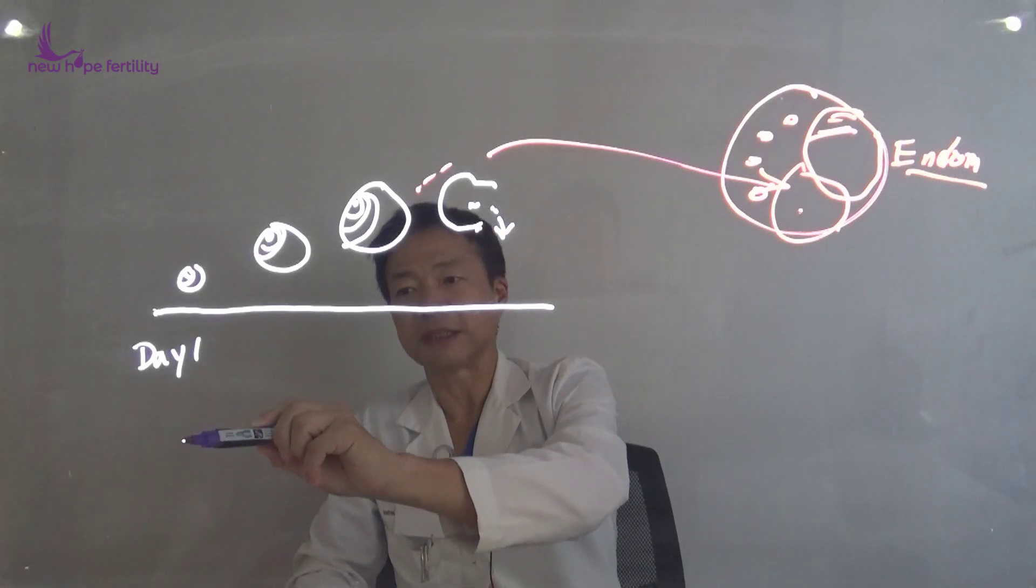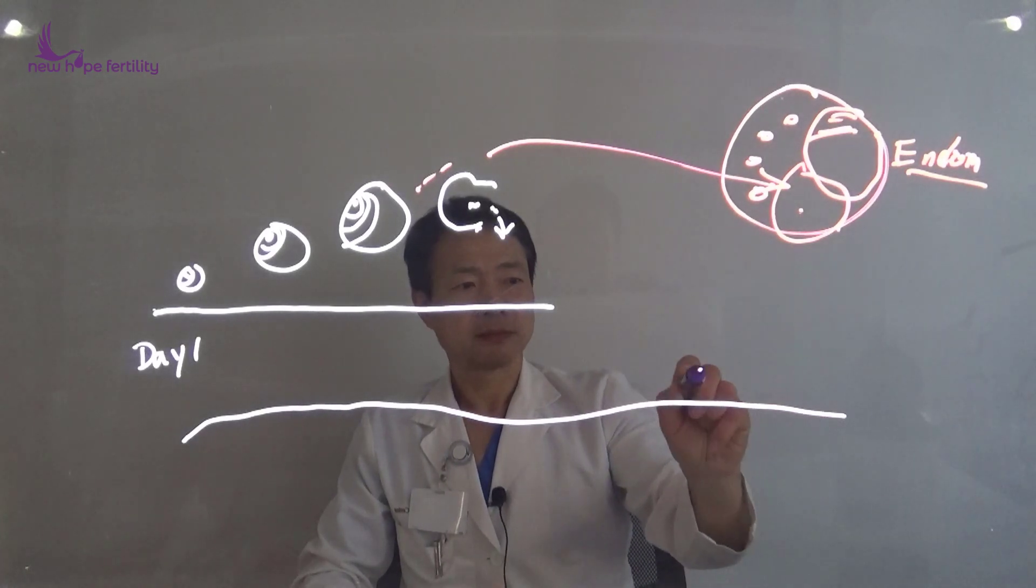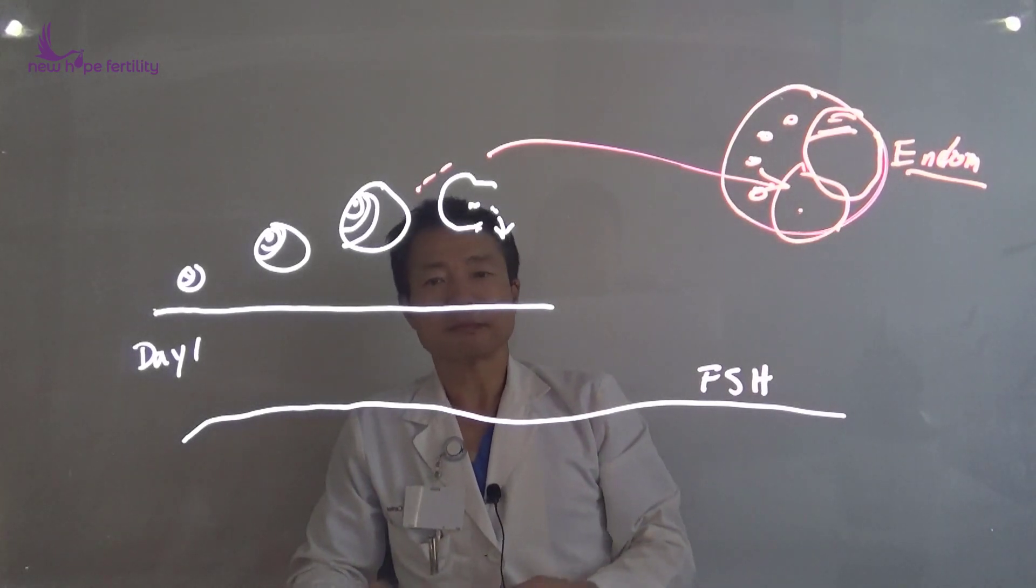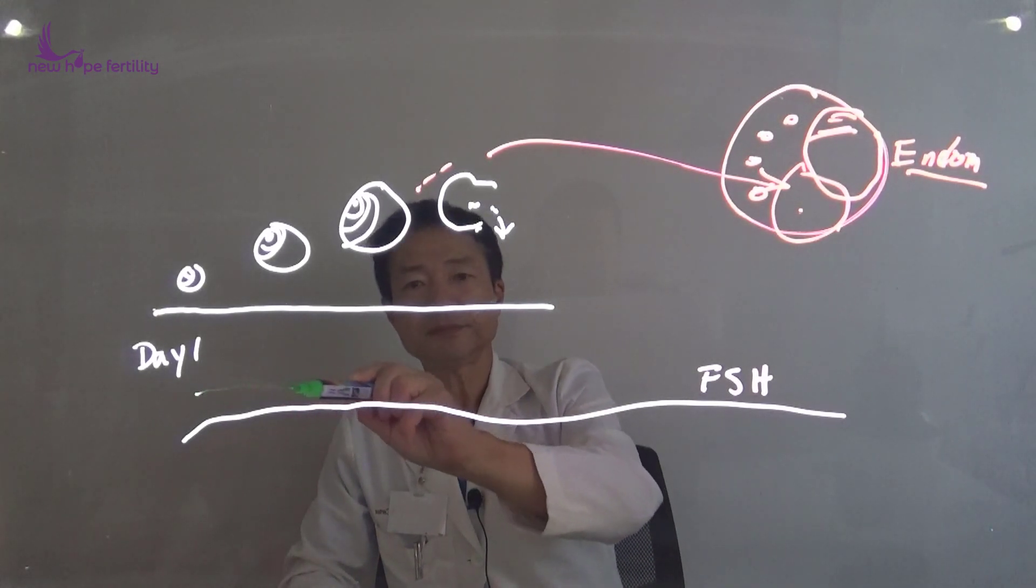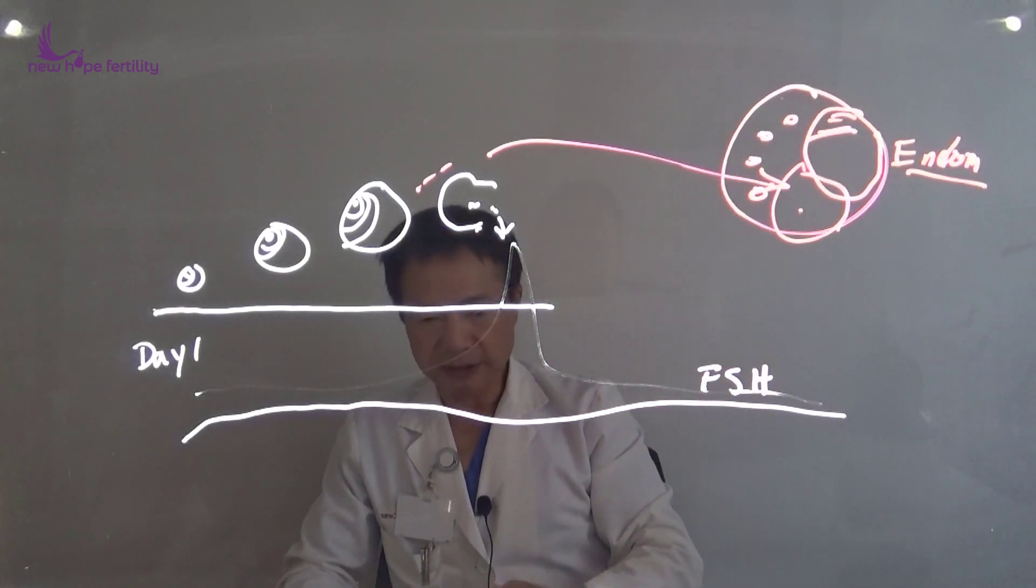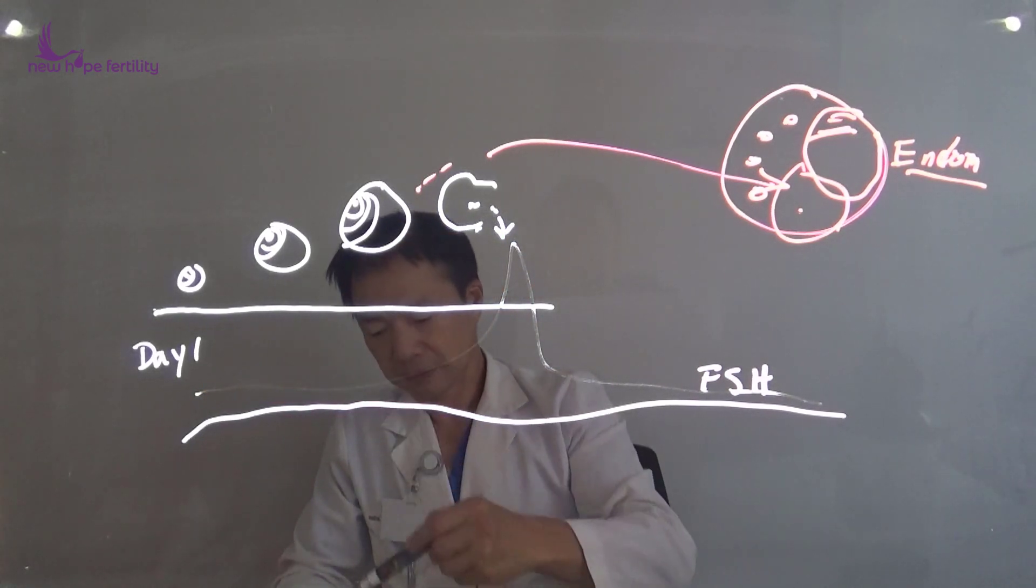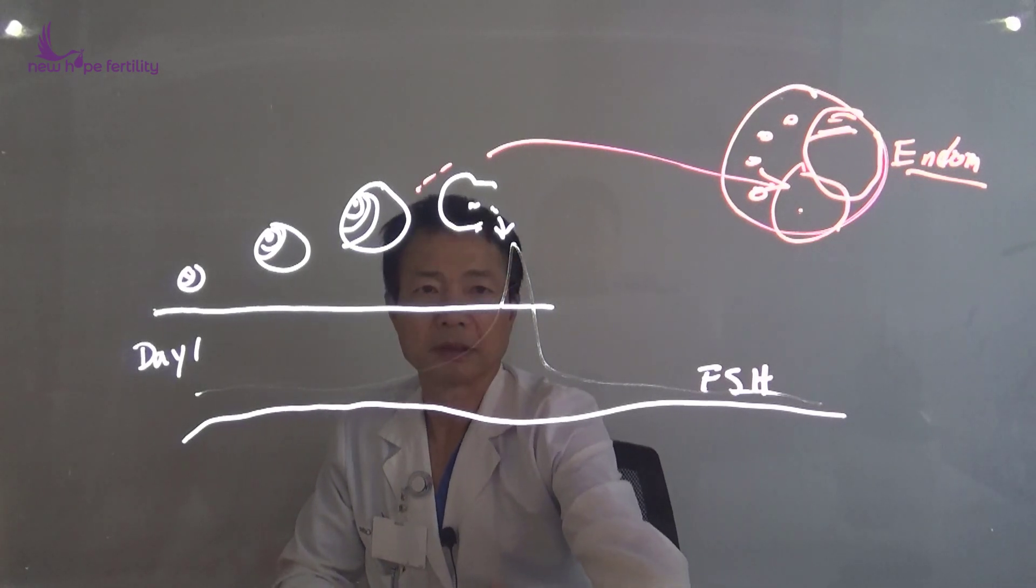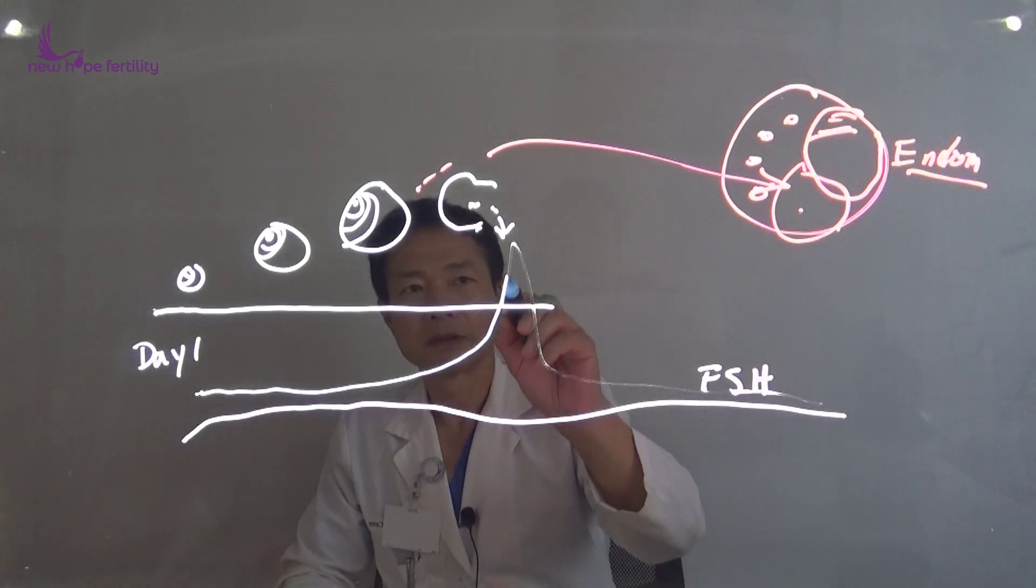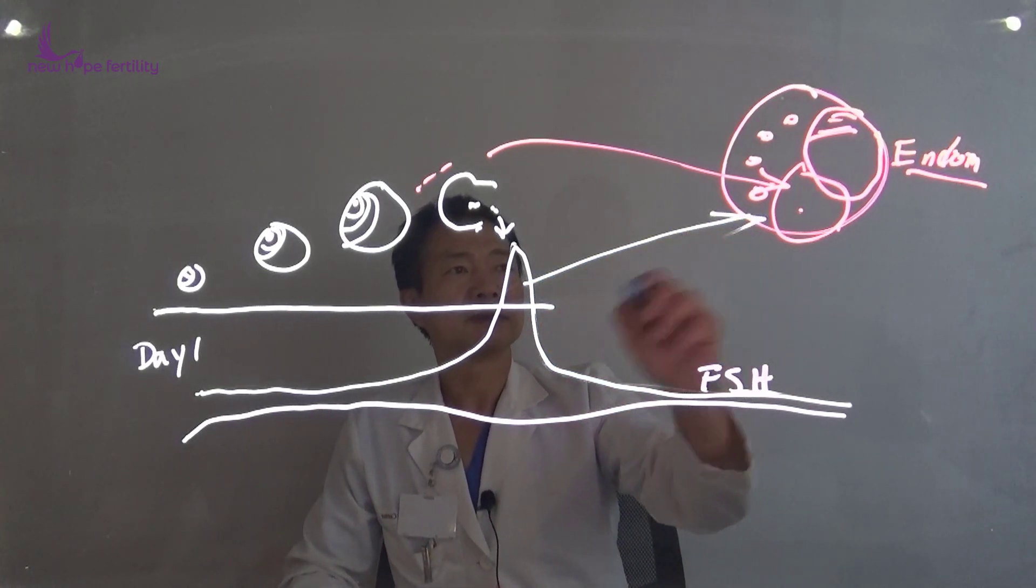The two hormones, one called FSH. If you don't see this kind of curve, then you're going to get cysts.